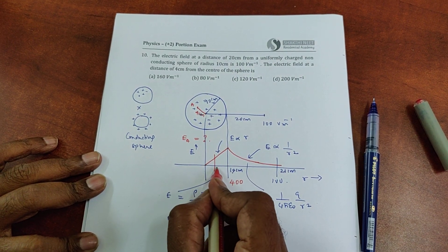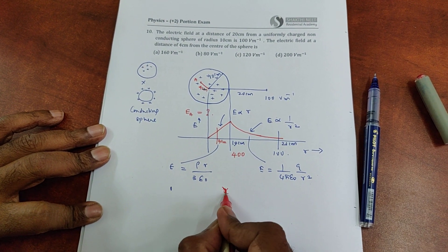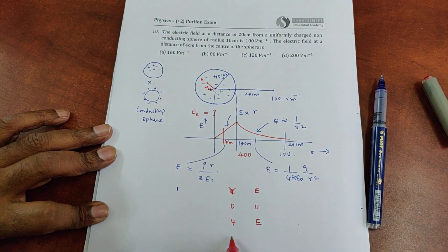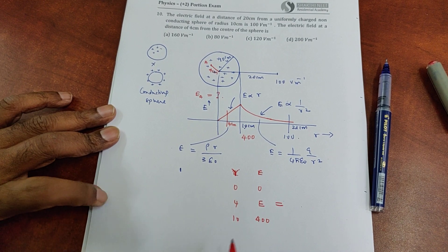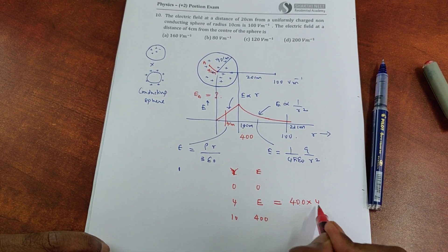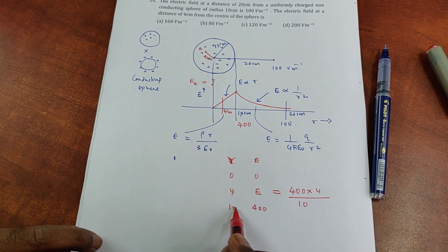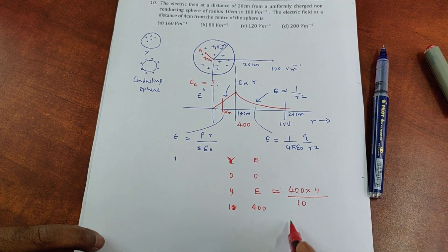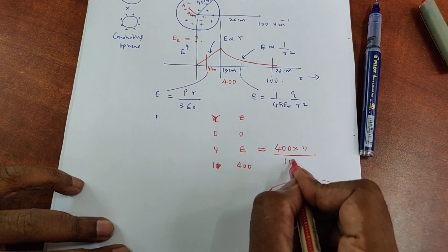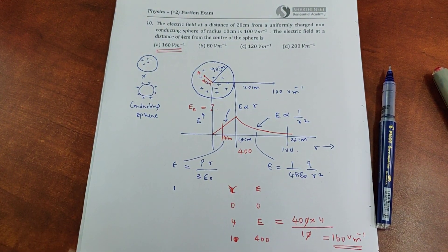Now we come to point A at a distance of 4 centimeter. When r = 0, the electric field is 0. When r = 10 centimeter, the electric field is 400 V/m. Since it is a straight line — linearly proportional — the electric field at 4 cm equals 400 × (4/10) = 160 volts per meter. The electric field equals the field at the surface times (r/R). So the answer is 160 volts per meter — the first option.